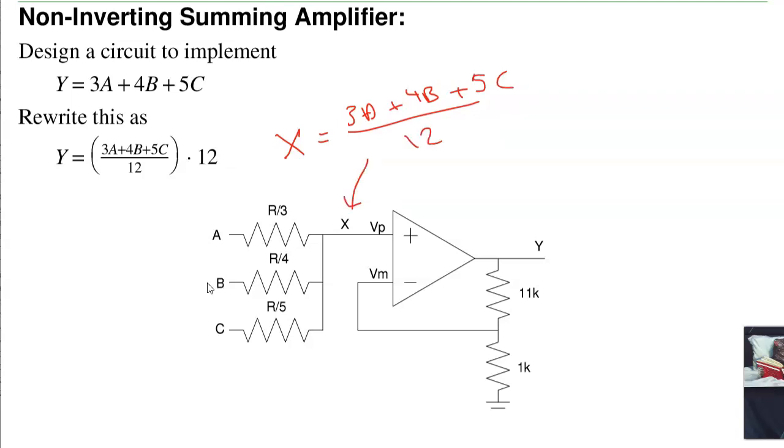That's the voltage right there. To get rid of the 12, I multiply by 12. And to get a gain of 12, this is 1 plus the ratio. 1 plus 11 to 1 gives me a gain of 12.